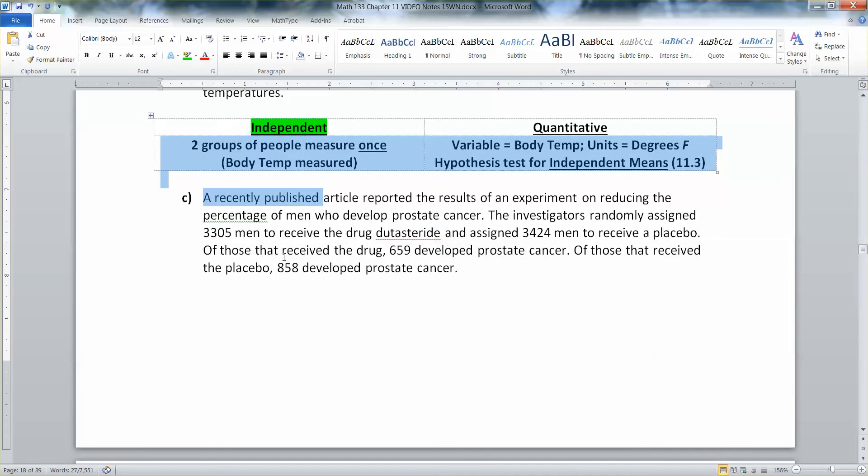All right. A recently published article reported the results of an experiment on reducing the percentage of men who develop prostate cancer. The investigators randomly assigned 3,305 men to receive the drug dutasteride, and assigned 3,424 men to receive a placebo. Of those that received the drug, 659 develop prostate cancer. And of those that received the placebo, 858 develop prostate cancer.